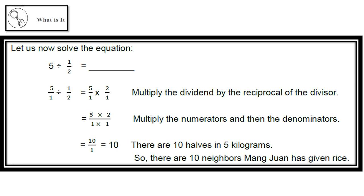Now let's use the reciprocal to solve: 5 divided by one-half equals blank. We write 5 as 5/1, then multiply by the reciprocal of one-half which is 2/1: so 5/1 times 2/1. Multiply the numerators: 5 times 2 equals 10. Multiply the denominators: 1 times 1 equals 1. The answer is 10/1, or simply 10. In other words, there are 10 halves in 5 kilograms, so Mang Juan has given rice to 10 neighbors.